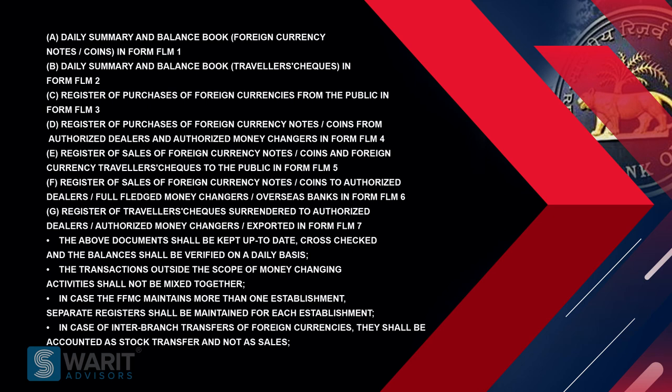There are certain registers and books of accounts necessarily to be maintained by FFMCs. Daily summary and balance book shall be maintained in form FLM 1. Daily summary and balance book for traveler checks shall be maintained in FLM 2. Register of purchases of foreign currency in FLM 3. Register of purchase of foreign currency notes from authorized dealers in FLM 4. Register of sale of foreign currency notes and foreign currency traveler checks to the public in FLM 5. Register of sale of foreign currency notes or coins to authorized dealers, full-fledged money changers or overseas banks in FLM 6. Register of traveler checks surrendered to the authorized dealers or authorized money changers exported in form FLM 7. The above documents shall be kept up to date and cross-checks and balances shall be verified on a daily basis.